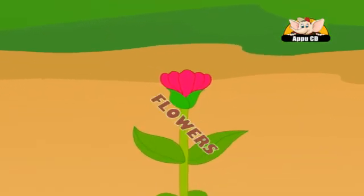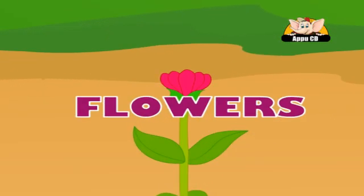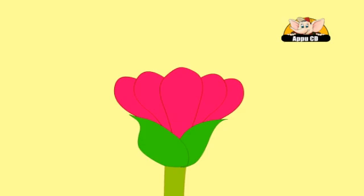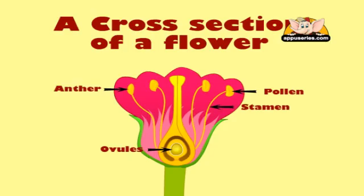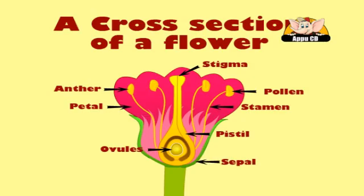Flowers are the reproductive part of most plants. Flowers contain pollen and tiny eggs called ovules. Flowers contain stamen, anther, stigma, pistil, petal, and sepal.